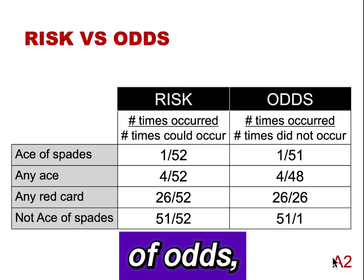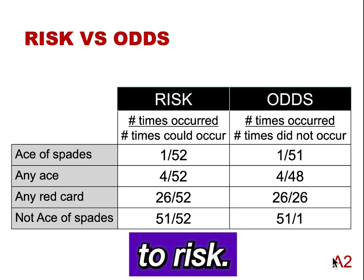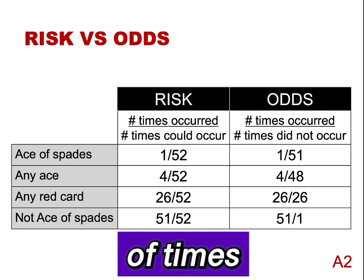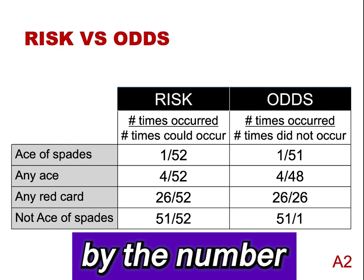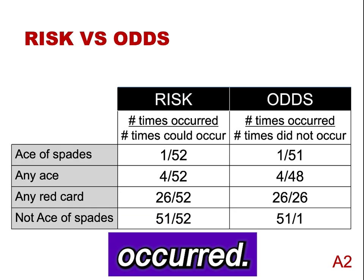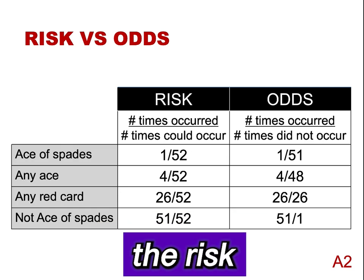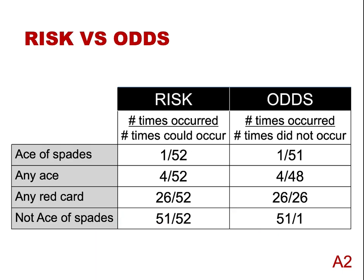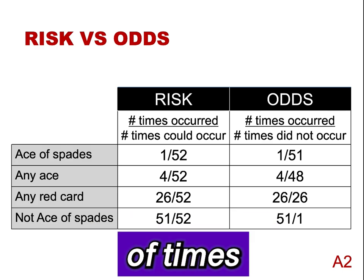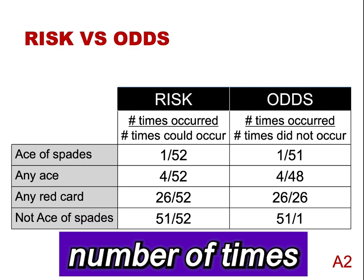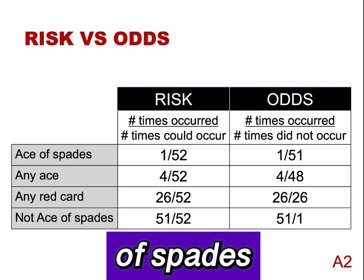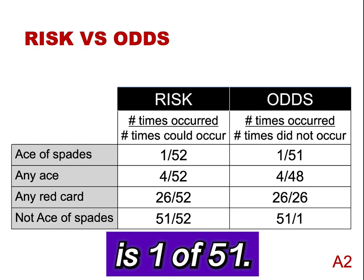To understand the concept of odds, it is helpful to compare it to risk. A risk is the number of times an event occurred divided by the number of times it could have occurred. For example, the risk of drawing the ace of spades from a deck of cards is 1 of 52. Odds is the number of times an event occurred divided by the number of times it did not occur. The odds of drawing the ace of spades from a deck of cards is 1 of 51.